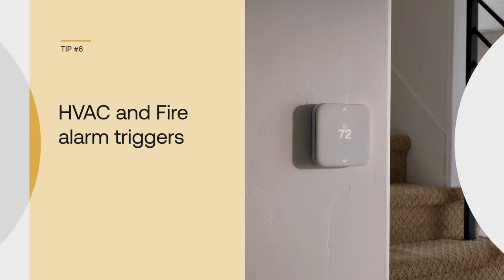Disasters aren't in our control, but what we can control is how we prepare for them. And with the Vivint system, you can use custom actions to unlock all of your doors from anywhere, just in case there's a fire or a carbon monoxide incident.